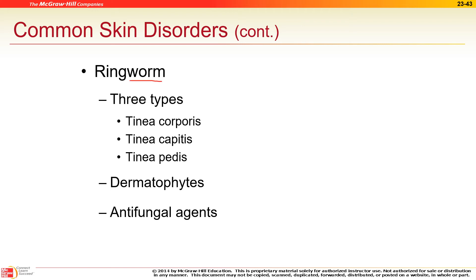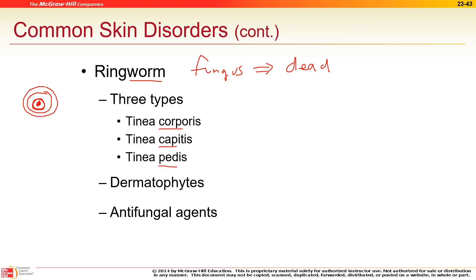Ringworm is not a worm — it's a fungus. On the body it's tinea corporis; on the head it's tinea capitis; on the feet it's tinea pedis, known as athlete's foot. Fungi can only eat dead things — they're decomposers. The fungus eats the outermost dead skin, then moves outward to the next layer, creating the characteristic ring pattern.